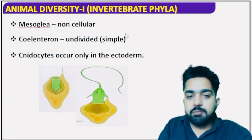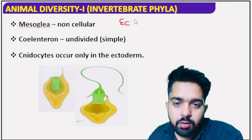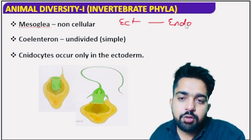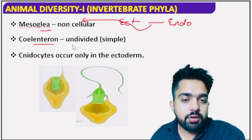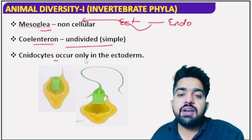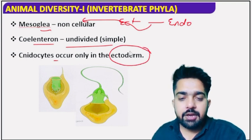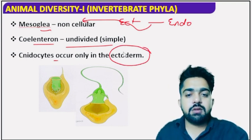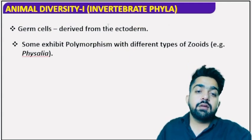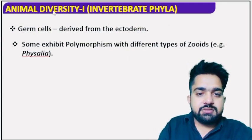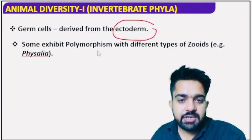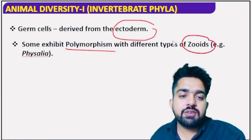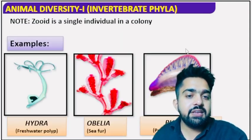In Hydrozoa, mesoglea is non-cellular — a non-cellular layer present between ectoderm and endoderm, known as mesoglea. The coelenteron or cavity is simple and in an undivided state. Cnidocytes are present in the ectodermal layer. Germ cells are of ectodermal origin. Some show polymorphism in the form of zooids — for example Physalia — where a zooid is a single individual in the colony.